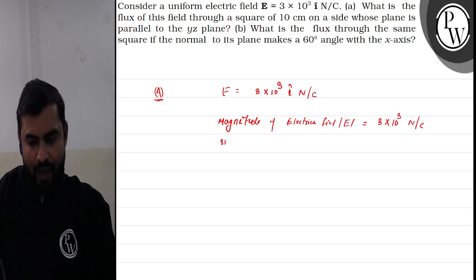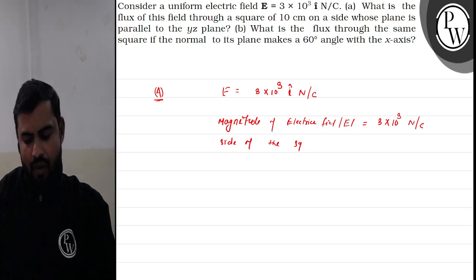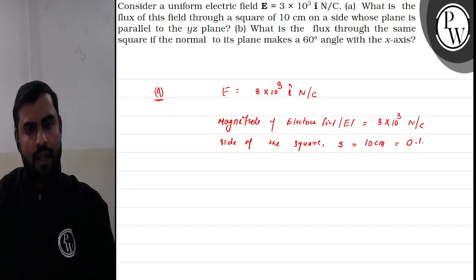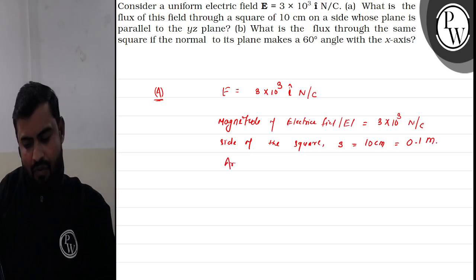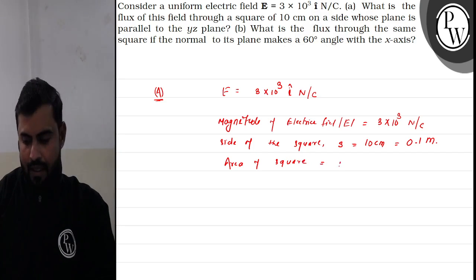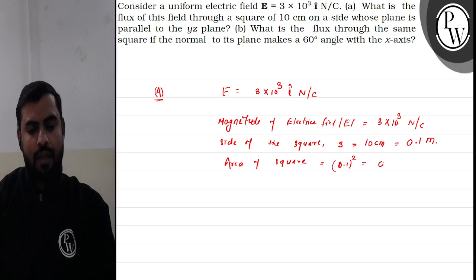The side of the square is also given. The side of the square S is given as 10 centimeters, which means it is 0.1 meter. So the area of the square will simply be 0.1 squared, which equals 0.01 meter squared.